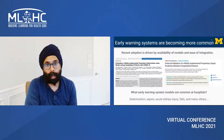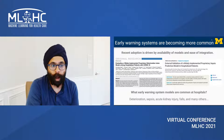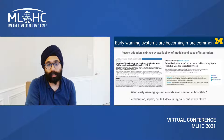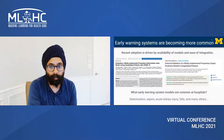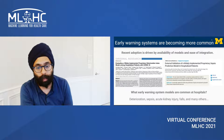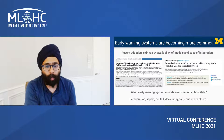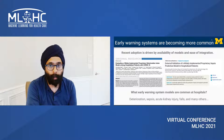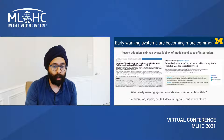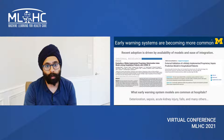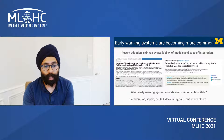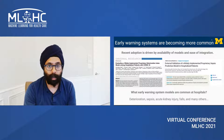Early warning systems are becoming more and more common. Recent adoption is driven by the availability of models and the ease of integration. We've previously looked at deterioration models and sepsis models, but many other models exist for things like acute kidney injury, falls, as well as many other outcomes.